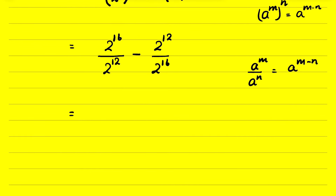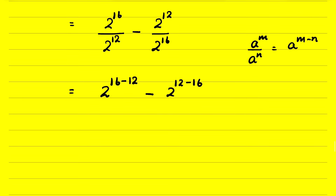2 raised to the power 16 upon 2 raised to the power 12 means 2 raised to the power 16 minus 12, minus 2 raised to the power 12 minus 16. This gives 2 raised to the power 4, and 12 minus 16 is negative 4 — since we cannot subtract 16 from 12, we write 2 raised to the power minus 4.